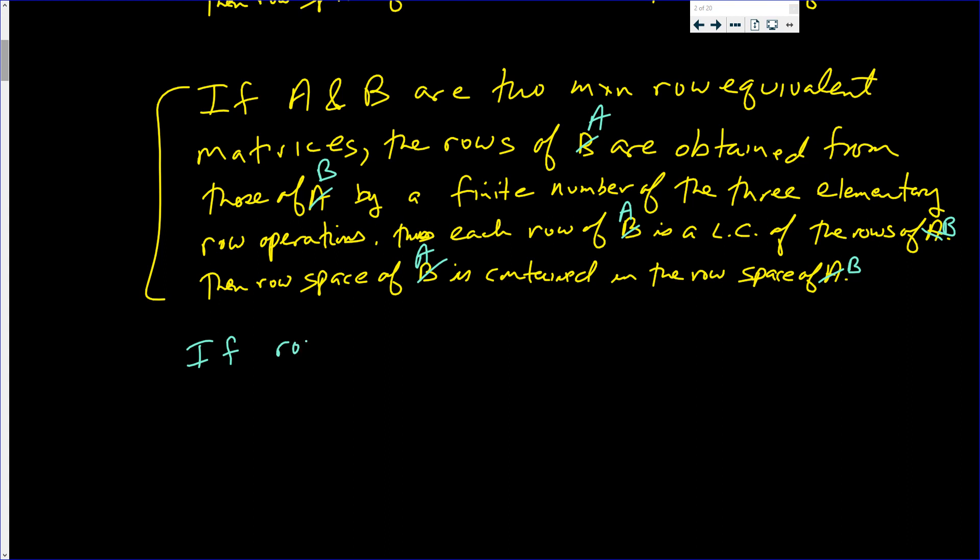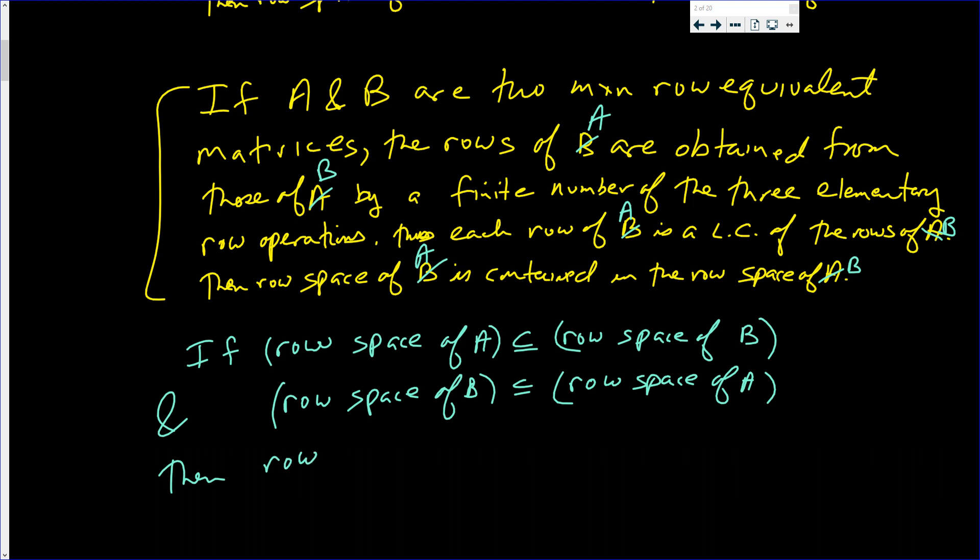Well, if the row space of A is contained in the row space of B, and the row space of B is contained in the row space of A, then we have equality. The row space of B is equal to the row space of A.